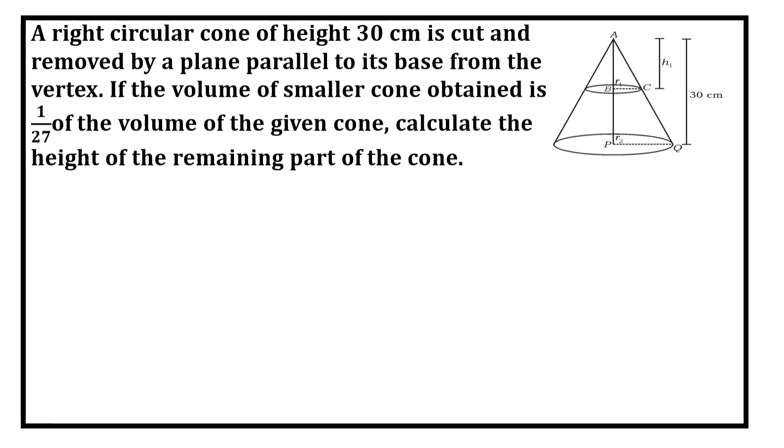Now we have volume of smaller part of the cone is equal to 1/27 of the volume of the bigger cone. We know that volume of the cone is equal to 1/3 π r² h. Now let us write volume of the smaller cone. What is it? 1/3 π r1² h1.